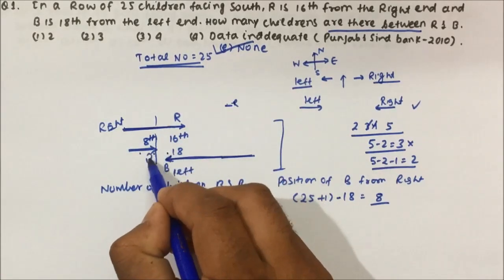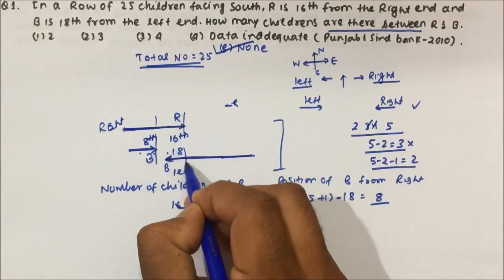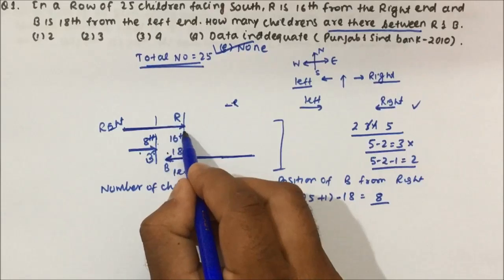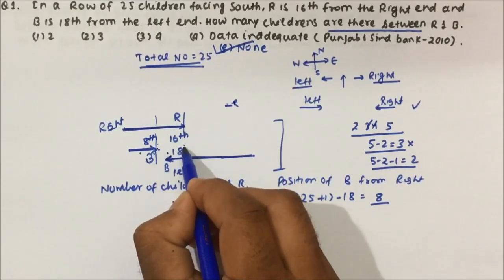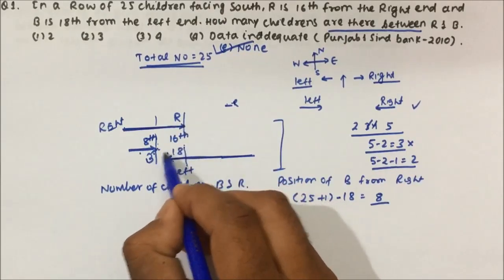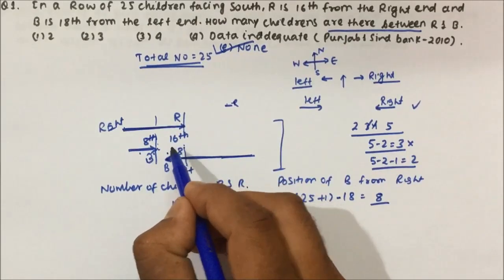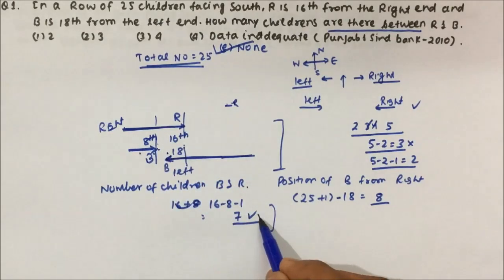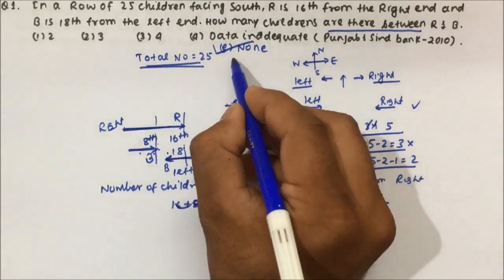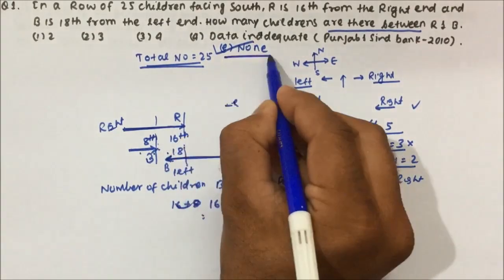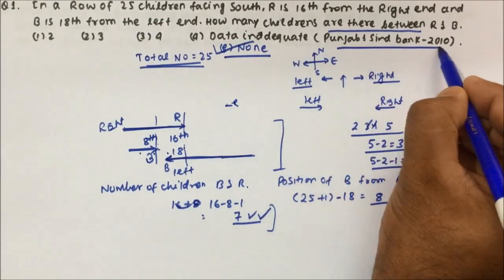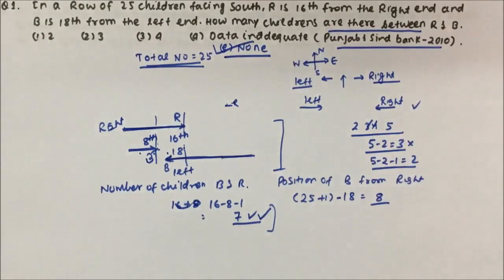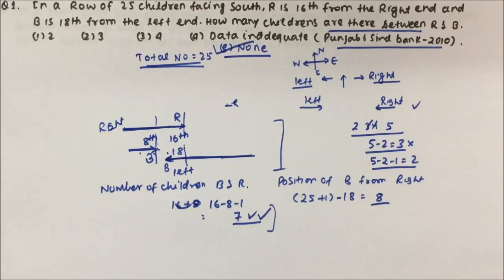Now we can calculate the number of children between B and R: 16 minus 8 minus 1 = 7 children. In this question the answer is none of the given options, because the number of children between B and R is 7. This question has already been asked in Punjab and Sindh Bank 2010. Thanks a lot for watching the video.